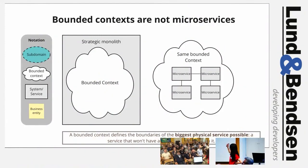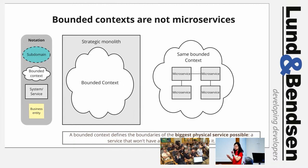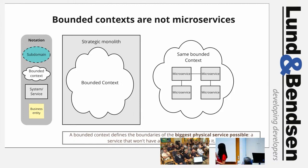Bounded contexts are not microservices — they have physical boundaries. One bounded context can be implemented as a strategic monolith, or it can be implemented as small microservices. Think of a bounded context as the largest physical boundary of a service possible — because that's where you don't have any conflicting models. If you know the domain very little, start with a large granular physical boundary. It's much easier to extract physical services out of a large context than to refactor wrongly-bounded microservices.